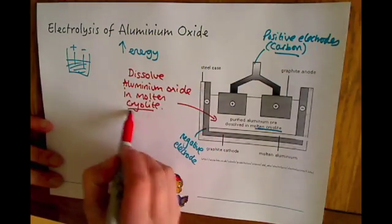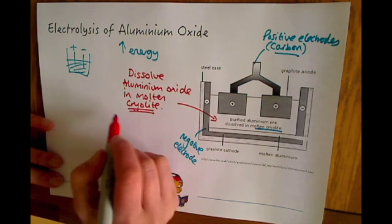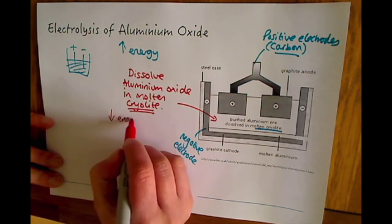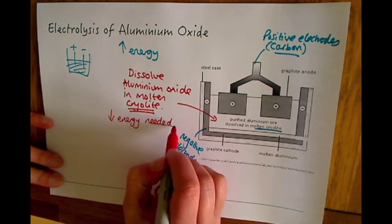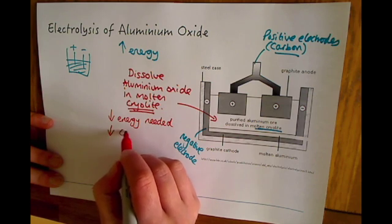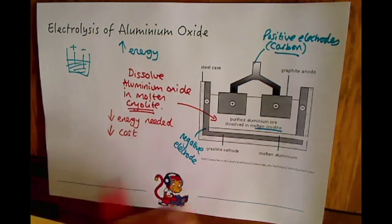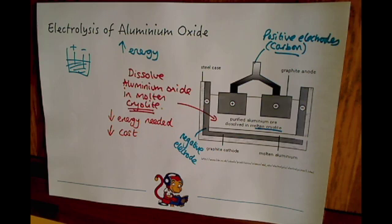Importantly, what this does—and you need to know this for your exam—is that it reduces the energy needed for the electrolysis of the aluminium oxide and therefore reduces some of the cost needed to extract that aluminium.